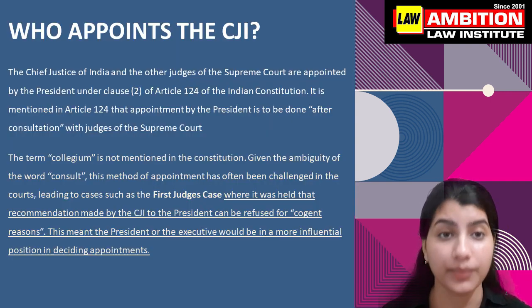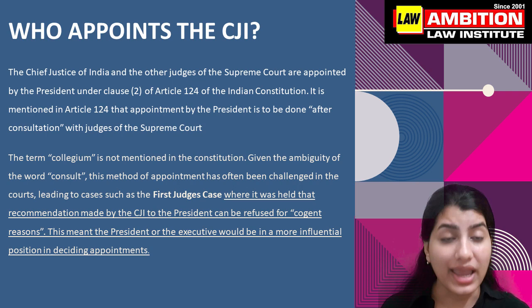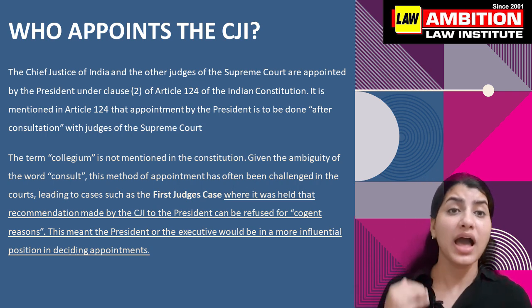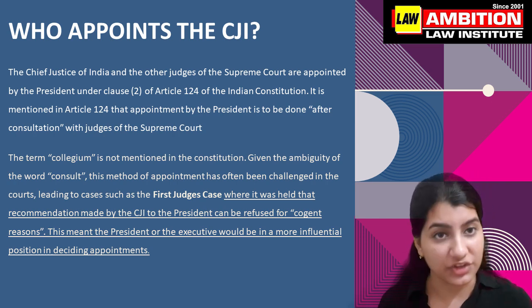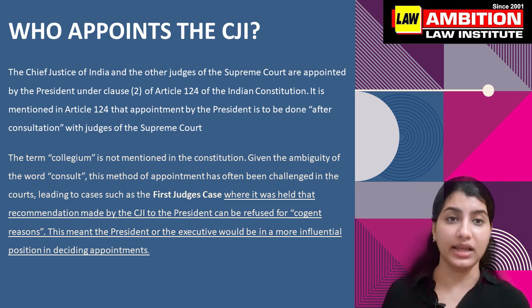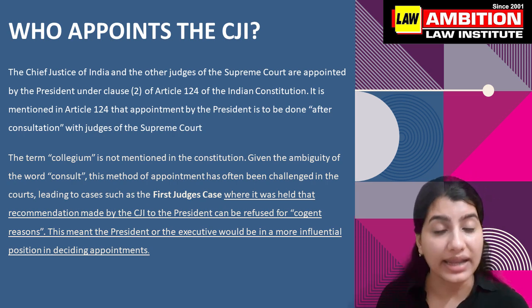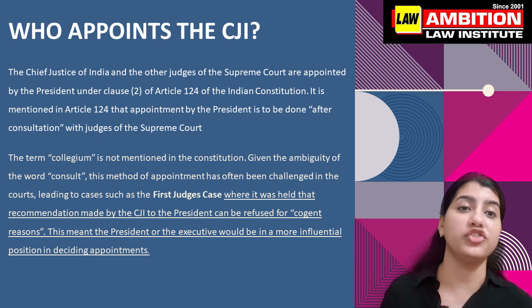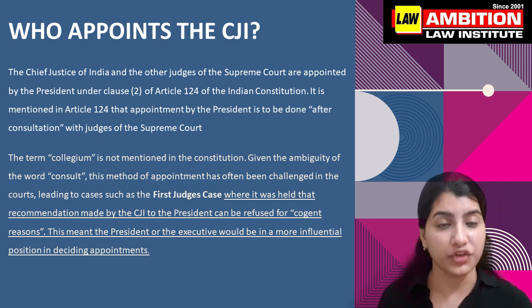Now let's understand who appoints the CJI and how. The president has the power to appoint the CJI as well as the judges of the Supreme Court under Article 124, sub-clause 2 of the Indian Constitution. This article bestows the power upon the president to appoint the CJI as well as the judges in consultation with the judges of the Supreme Court.